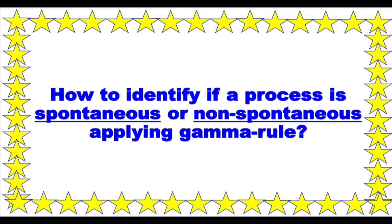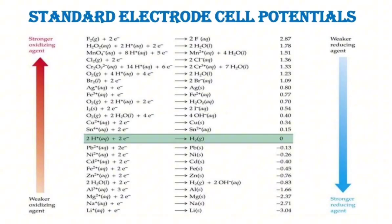Hi friends, I'm back. Today we will discuss the gamma rule in order to identify spontaneous and non-spontaneous processes. In order to apply this method, we need to have this table that you can see on your screen.